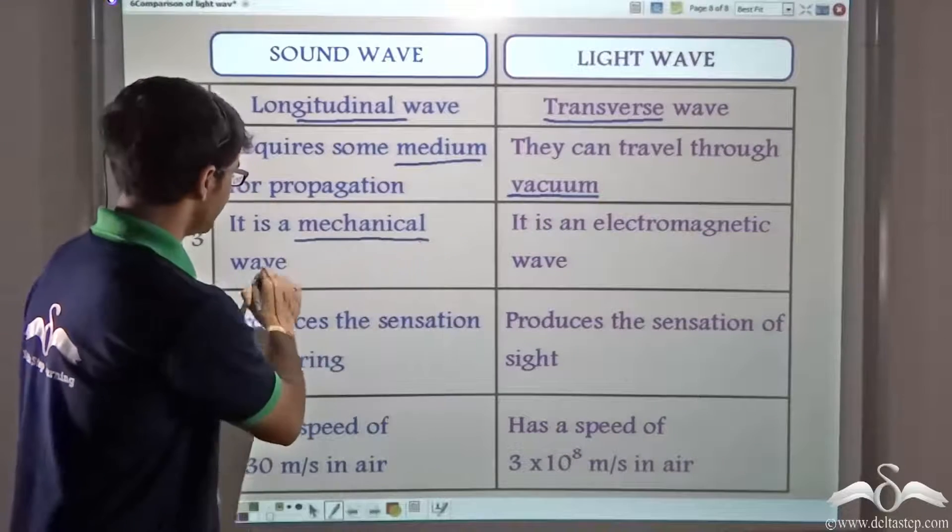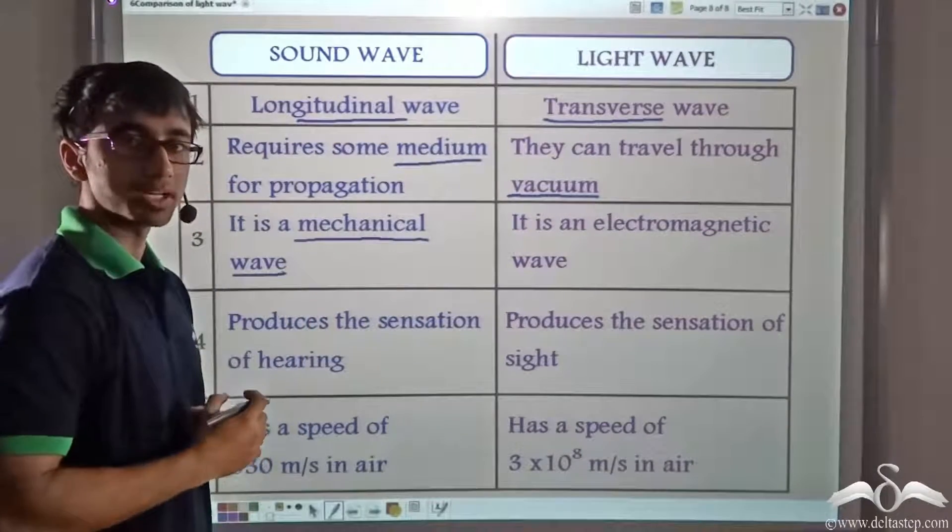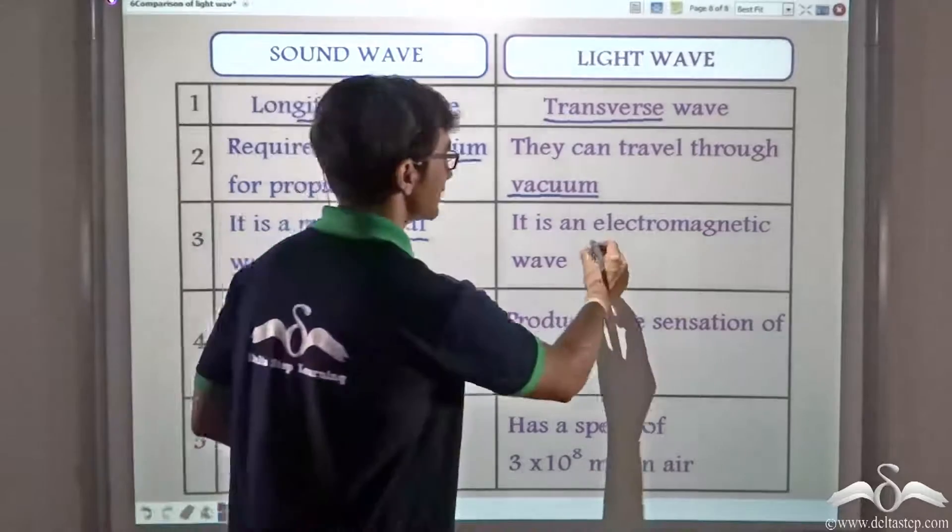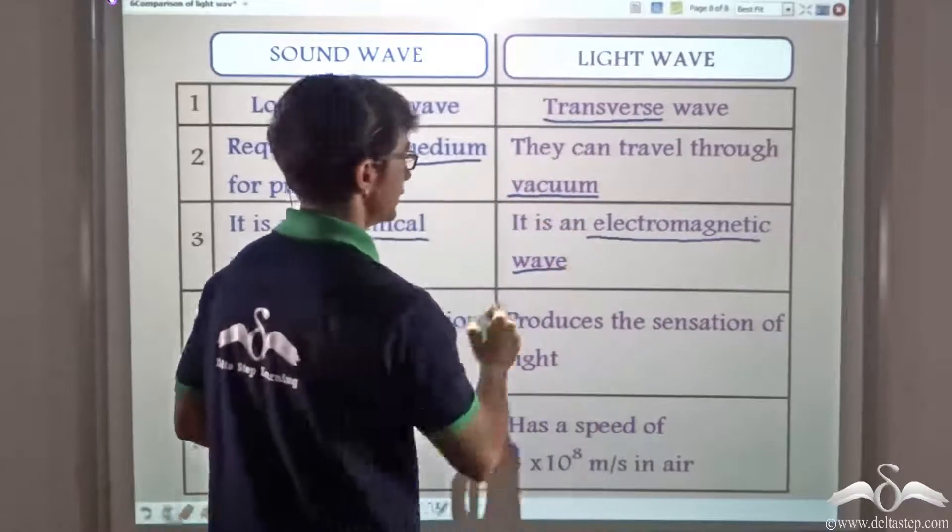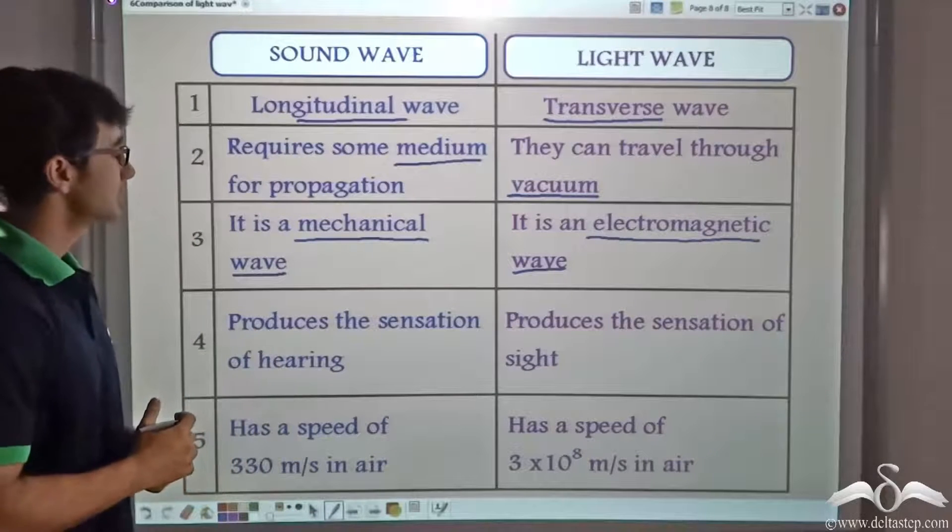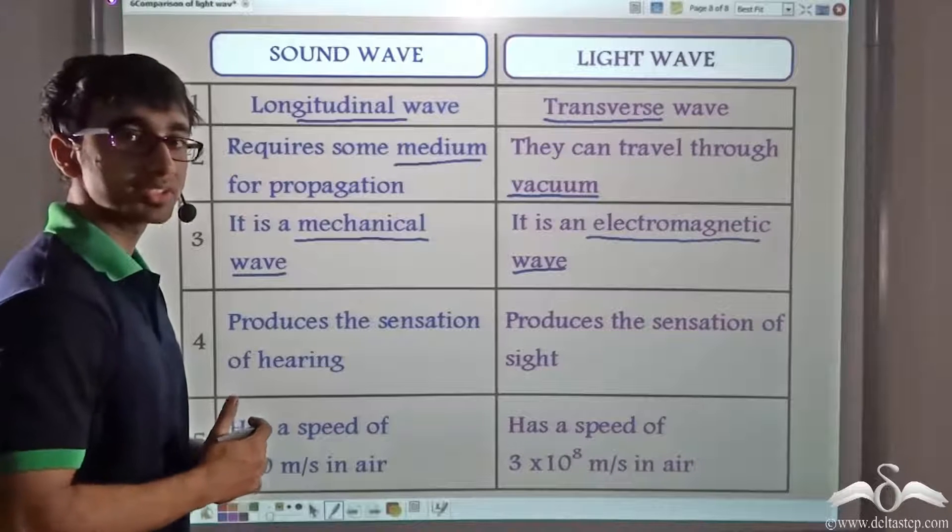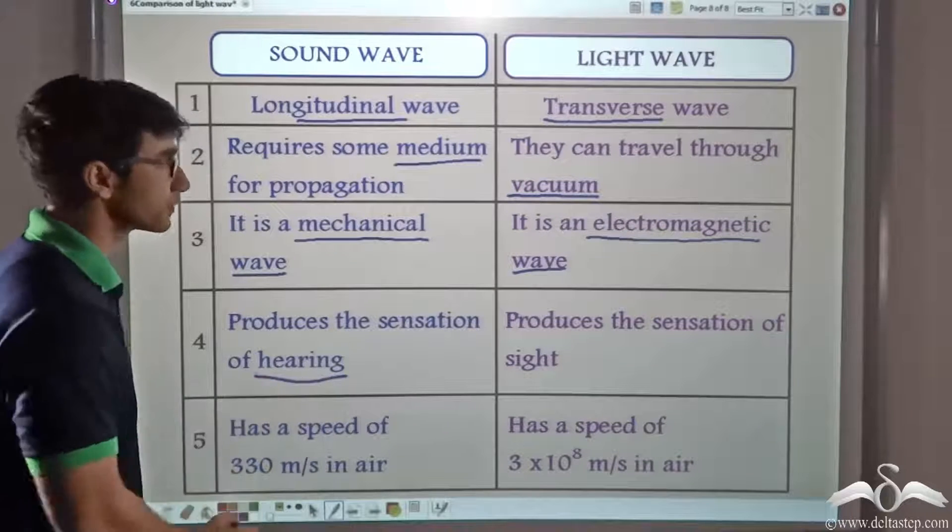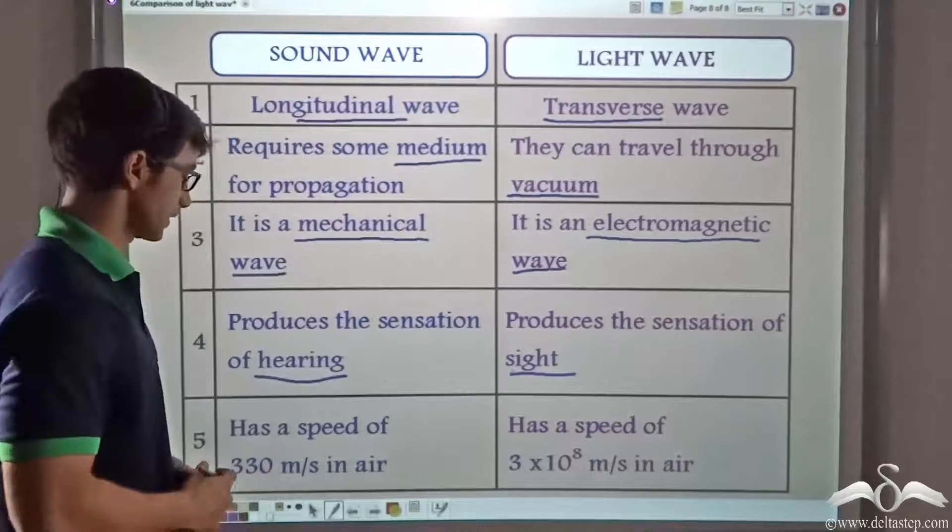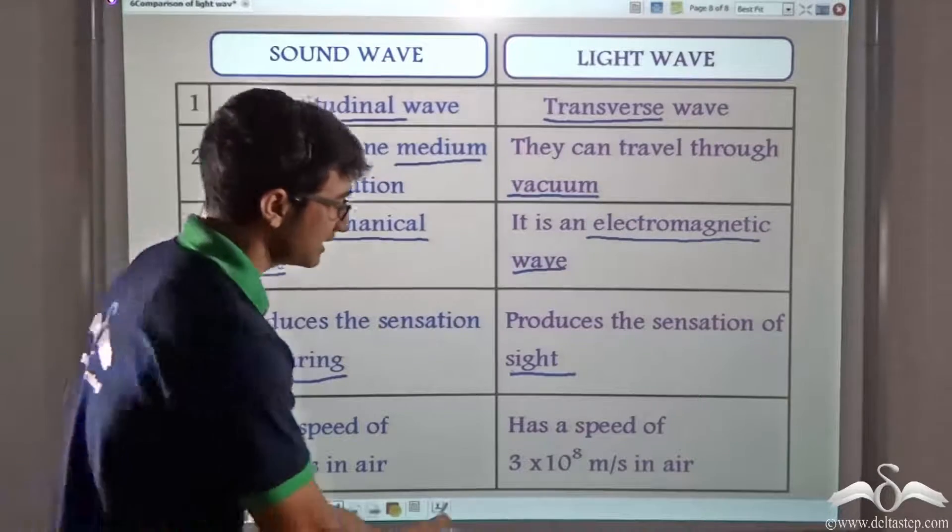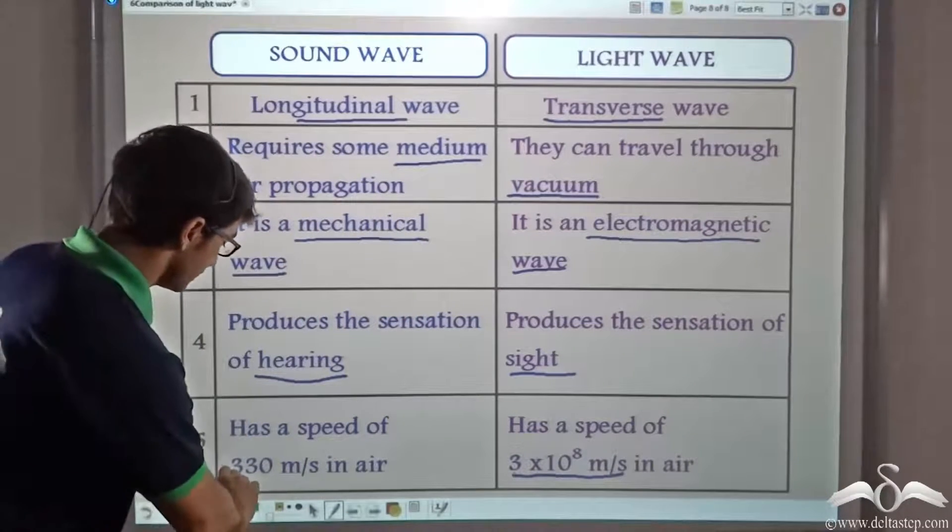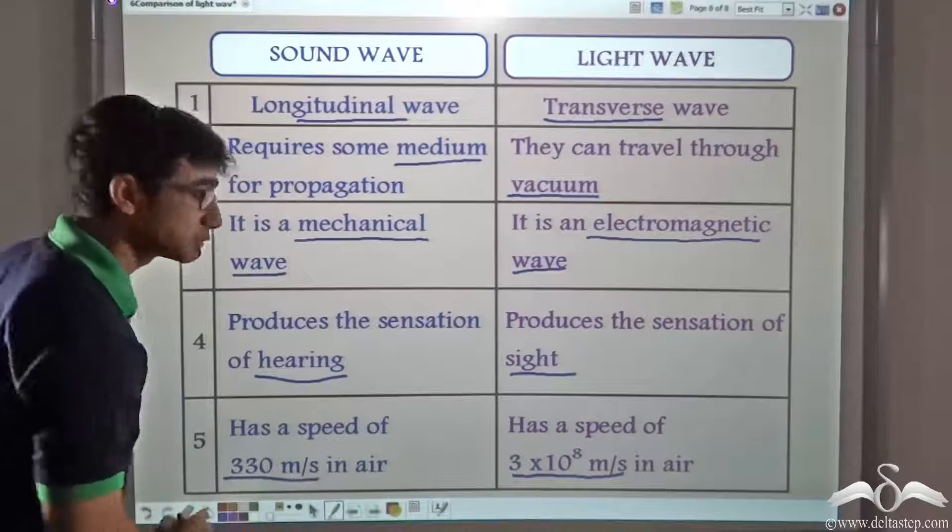Which means they depend on the vibration of the medium particles to travel from one point to the other. Whereas light waves are electromagnetic waves. It does not require a medium to travel from one point to the other. Sound waves, as you all know, produces in us the sensation of hearing. Whereas light produces in us the sensation of sight. Light waves have a speed of 3 into 10 to the power 8 meters per second in air. Whereas sound has a speed of 330 meters per second in air.